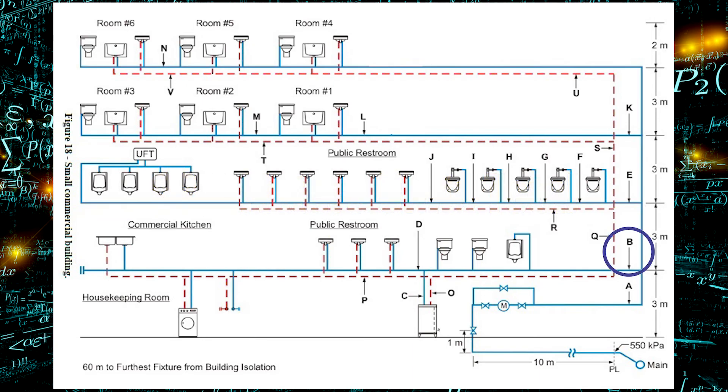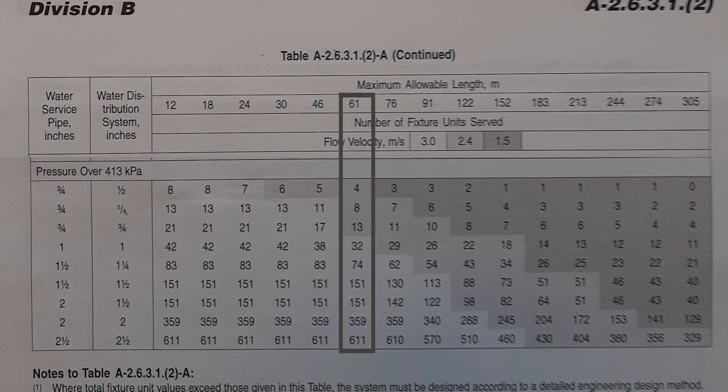So let's size pipe B right up to that urinal. Let's look up the appropriate table from the last video and we find out we are good with a one and a half inch pipe going right up to the urinal connection.